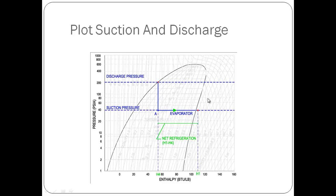Point B is defined by the suction pressure and the 20 degrees Fahrenheit of superheat, which is shown as the difference from the saturated vapor curve. We take this point down to H1 to find the enthalpy leaving the evaporator.